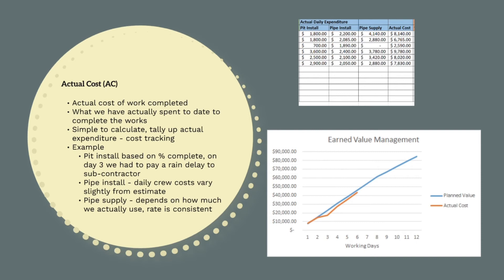As we are using a subcontractor for the pit install, actual cost is calculated by just taking a percentage of each of the pit install amounts, factoring in a rain delay on day 3 that we had to pay the subcontractor. For pipe install, the actual costs are just the actual costs we paid for our civil crew. This varies slightly depending on fuel and consumables used and overtime amounts worked. Finally, actual cost of pipe supply is done by using the pipe supply rate and the amount of meters installed. Together, these give us a daily actual cost of the work completed and allow us to plot the summary of actual costs.